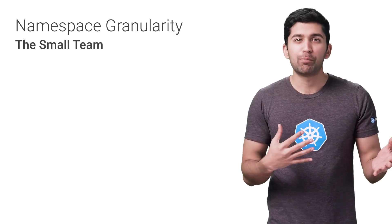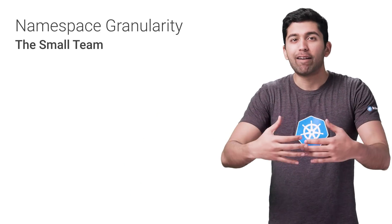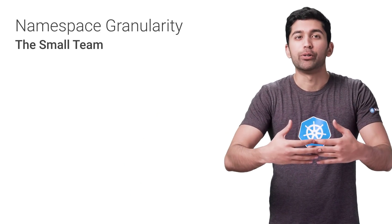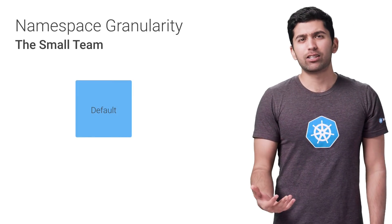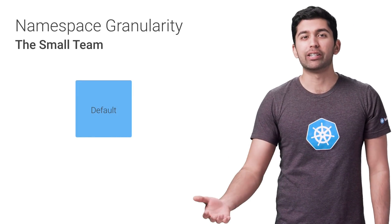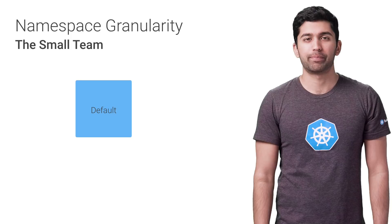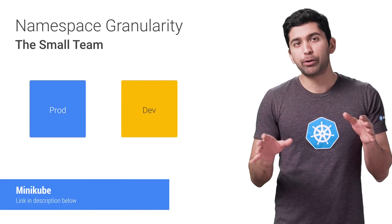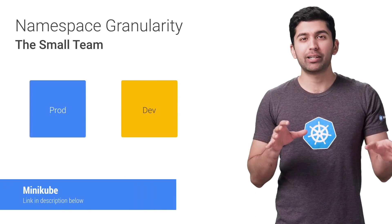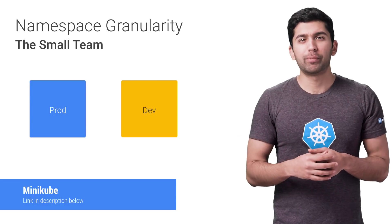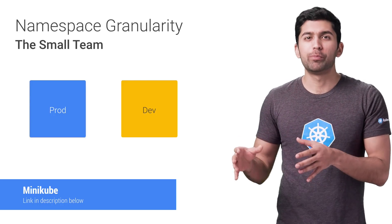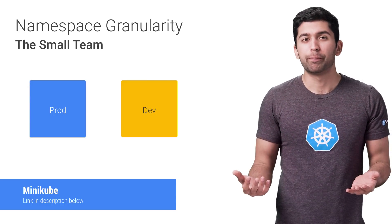Imagine you're part of a small team working on maybe five to ten microservices and you can easily bring everyone into the same room. In this situation, it makes sense to launch all production services into the default namespace. You might want to have a production and development namespace if you want to get fancy, but you're probably testing your development environment on your local machine using something like Minikube.